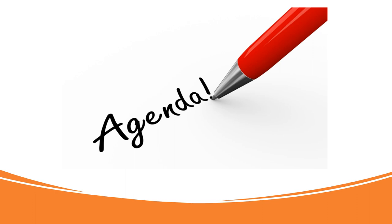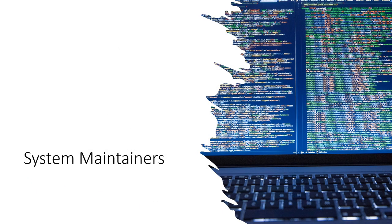We'll begin with CMS Contractors. First, System Maintainers. These contractors own and control the two national claims processing systems. They add automated edits and audits to make sure a service is covered under the law, is not part of another service or a different claim, and if the service has a time requirement between being performed or is a once-in-a-lifetime benefit. It's important to understand they do not complete complex medical review. Their job is to work with the system which drives the data used for medical review.